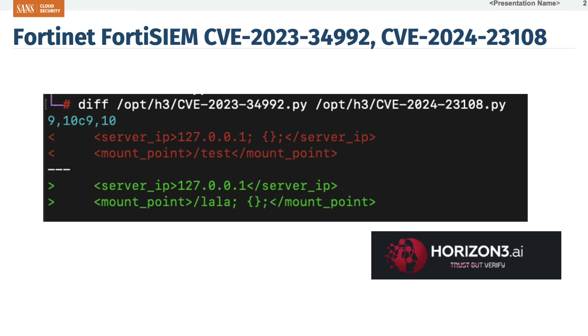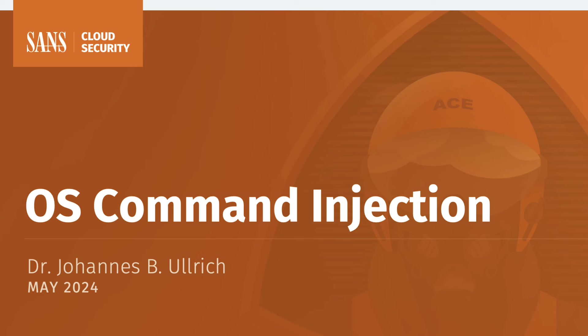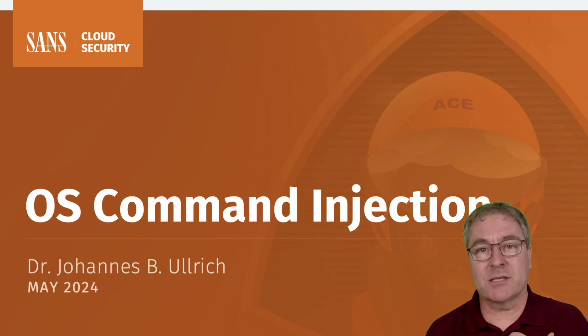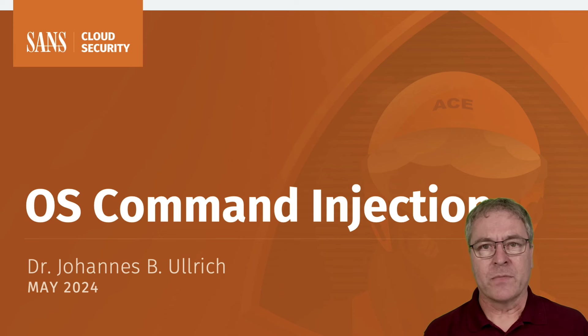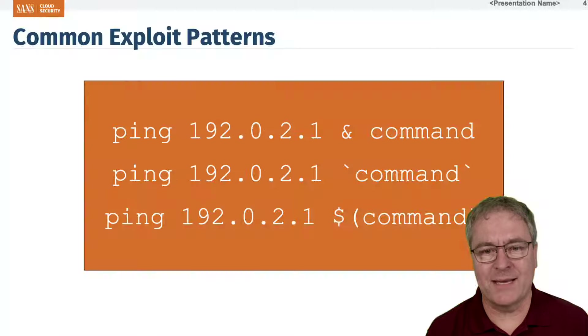The second vulnerability was actually fixed silently, and they later came forward that they had it. But let's talk about what OS command injection is, what the big deal is, how it happens, and most importantly from a developer's point of view — how are we actually going to prevent this vulnerability?